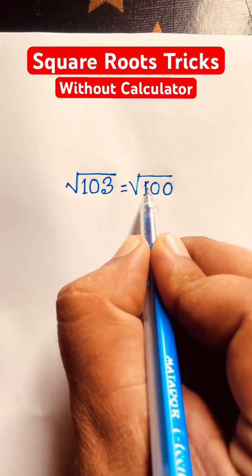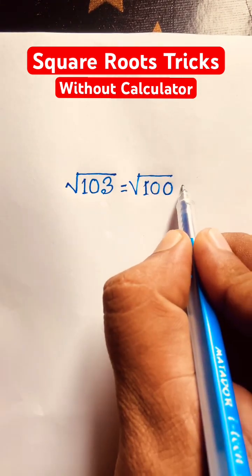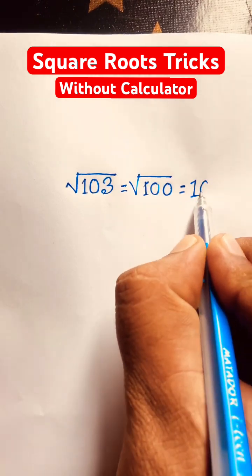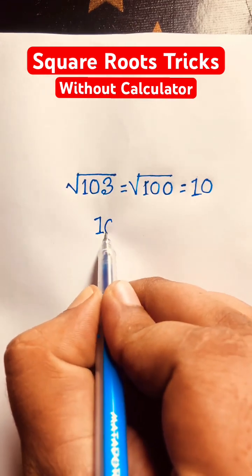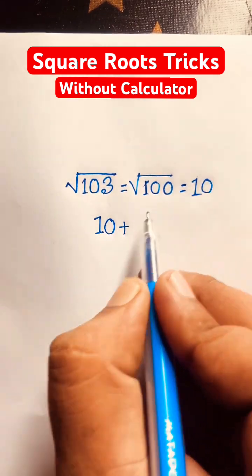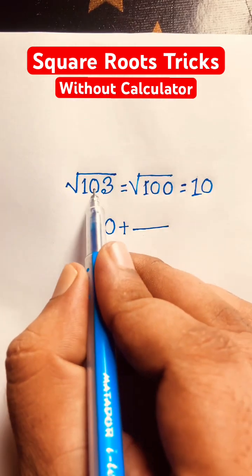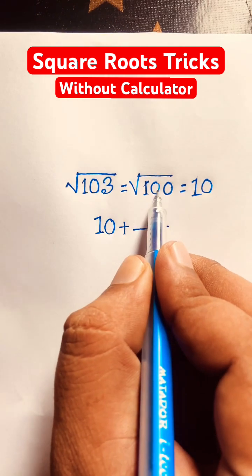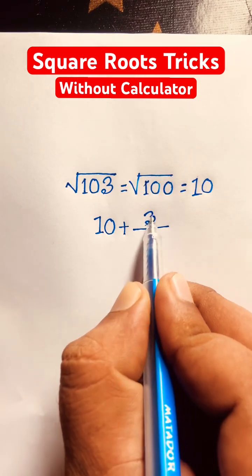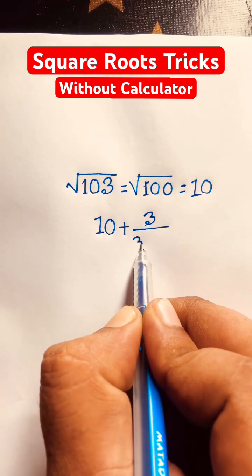So I can say square root 100, it will be 10. Then I can say 10, this 10 plus, I mean this value, and here is this subtract this. So 103 minus 100, it will be 3. Then here is this value, so it will be 3.